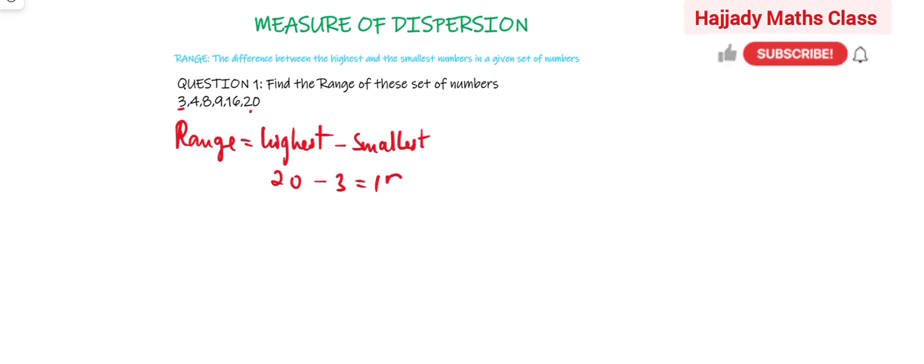You can see that calculating range is very easy, even for group data. Just look at the observation given to you, the highest value minus the lowest value. That is the value of range.